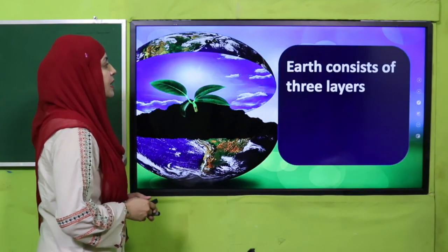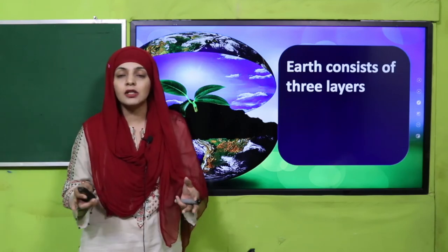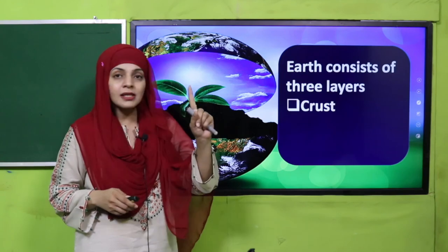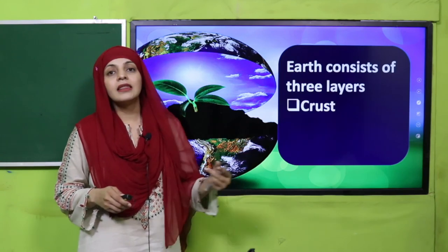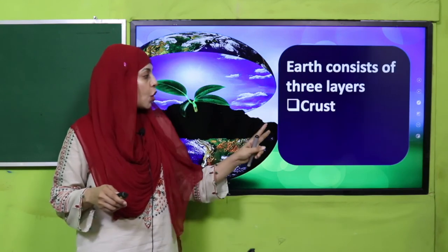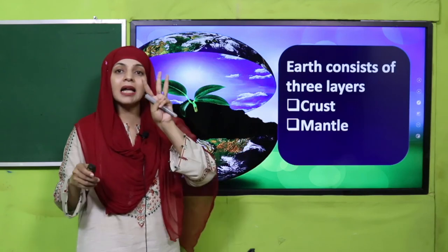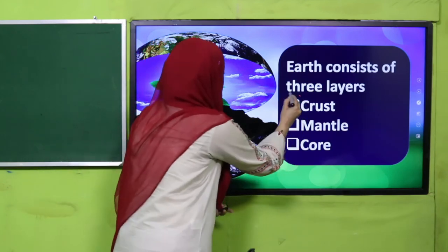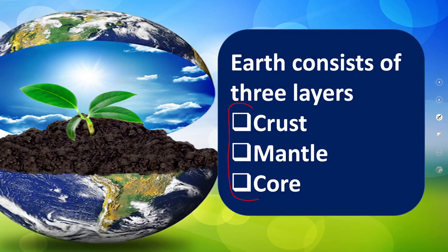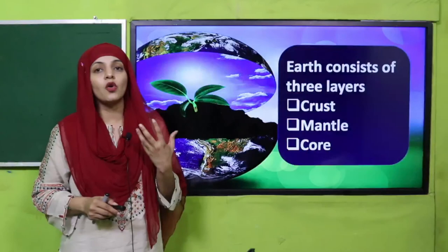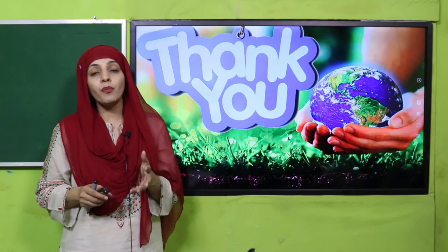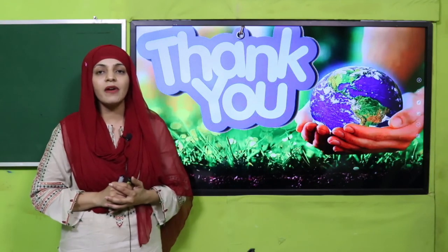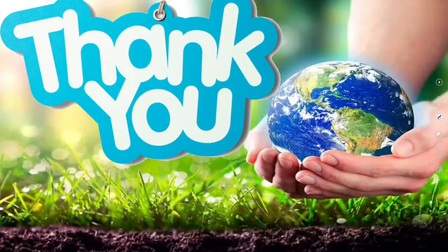So to wrap up, we have learnt that earth consists of three layers: number one, the crust; number two, the mantle; and number three, the core. These are the three layers of the earth. I hope now you know all about the interior of the earth. Keep everybody around you safe. Have a good day. Thank you so much and Allah Hafiz.